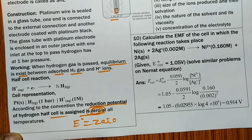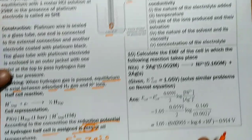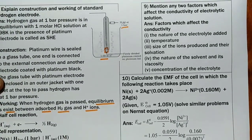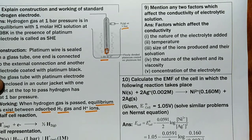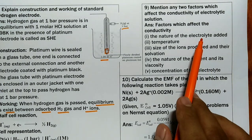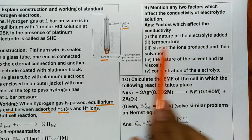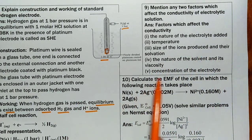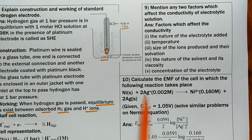Mention any two factors which affect conductivity. These are simple: nature of electrolyte, temperature, size of the ions, nature of solvent, and concentration of electrolyte.